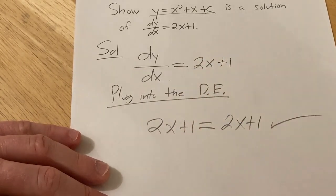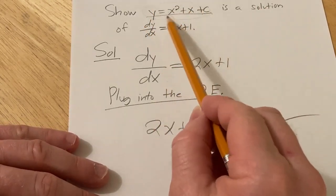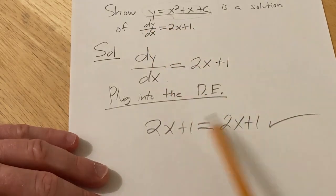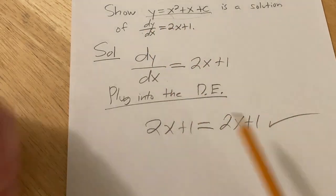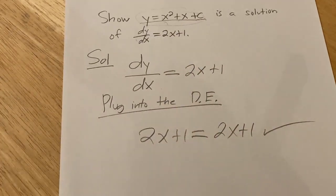So it checks. So we're done. That's basically all you have to do. You just take the derivative of this, plug it in here, and then make sure that what you get is equal. And then you've essentially proven or shown that this is a solution to this differential equation. It's that easy. Good luck.